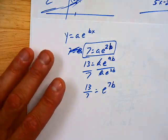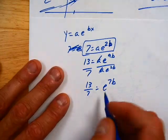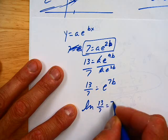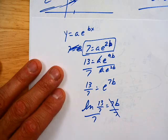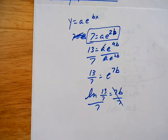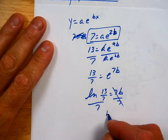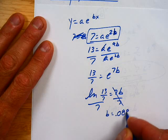And I'll talk more about this when we get to logarithms, but let me just go ahead and rewrite this. Natural log of 13 sevenths equals 7B. Divide by 7, divide by 7, because I do want to show you something. Calculate that for me, please. Natural log of 13 sevenths, and then divide it by 7. Is that right? Do you agree with that?